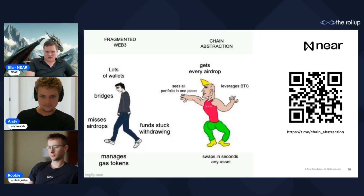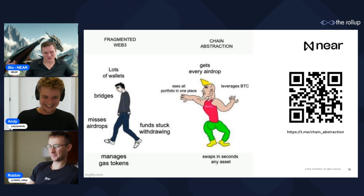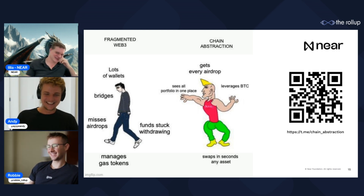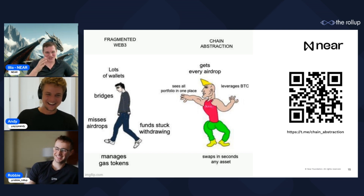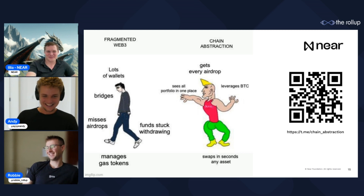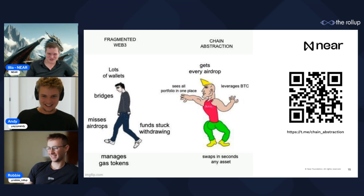Just to leave you with a meme: don't be a fragmented Web3 person with lots of wallets, stacked withdrawals, and missed airdrops. You want to be a chain abstraction chad — and chad also starts with chain abstraction. You want to see everything in one portfolio, get every airdrop, leverage your Bitcoin, swap any asset across all chains in seconds. Welcome to the chain abstraction movement.